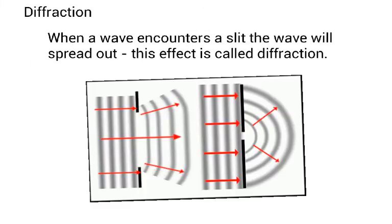Our final property of waves is something called diffraction. Now, when a wave encounters a slit, the wave will spread out, and this effect is called diffraction. Here you can see a wave travelling through, and it encounters a boundary. The boundary is here and here. And there's a gap in the boundary, and as it passes through, it will spread out around the wall here.